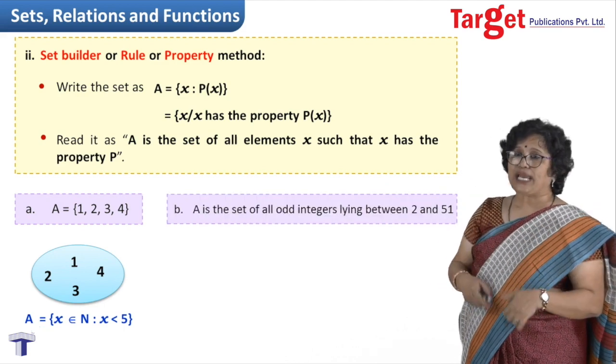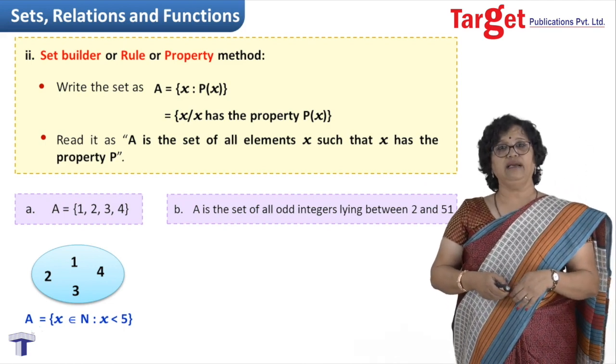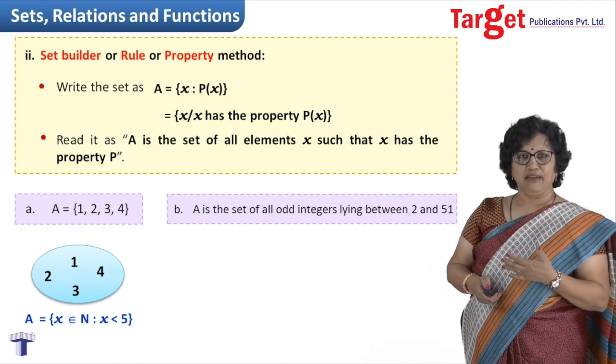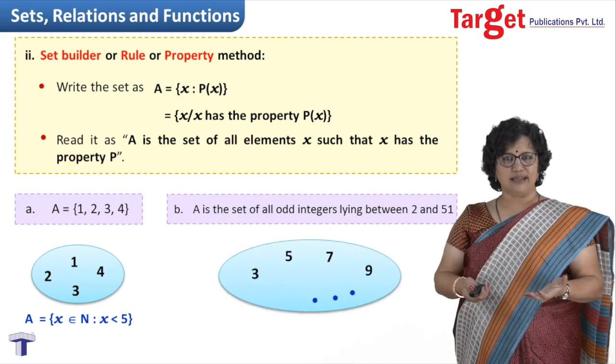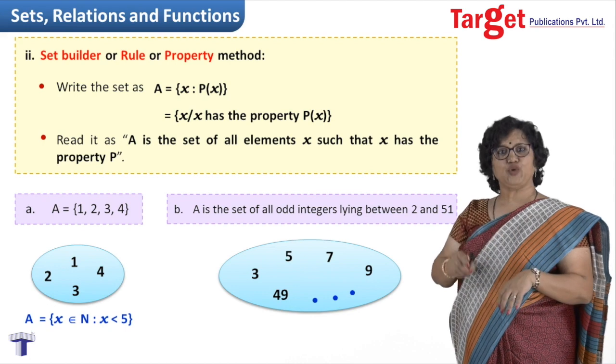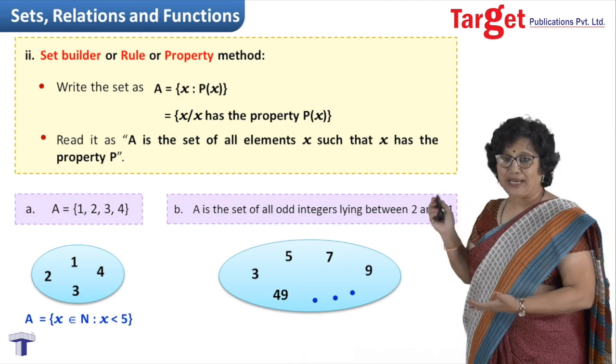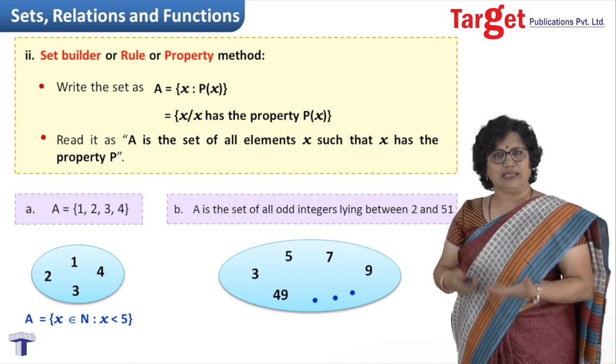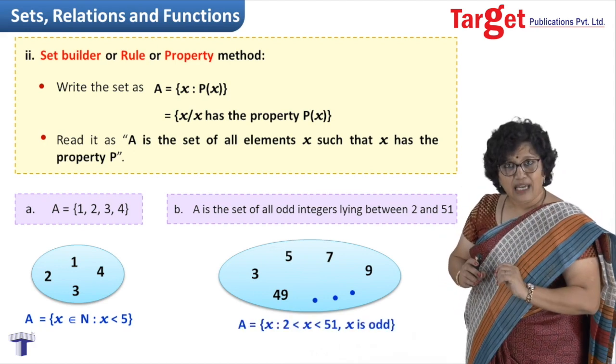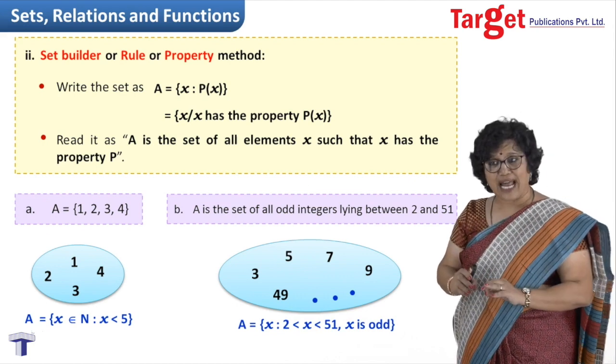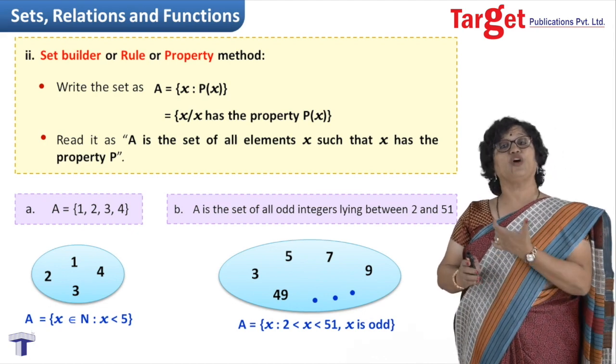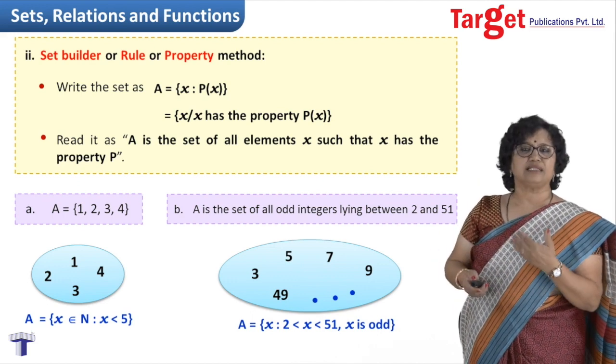My next example is: suppose I have to write all those odd integers which are between 2 and 51. Then I am saying odd integers and between, so obviously they will start from 3, 5, 7, 9. Now how long will I continue my list like this? So I write three dots and then my last number, 49. You can realize that if I start actually writing those numbers separated by comma, it is impossible to list all the numbers. So this property method actually comes to help, and we write that set A is a collection of all such x such that 2 < x < 51, and I put the additional condition that x is odd. So automatically this will start giving you answers as 3, 5, 7, 9, etc.